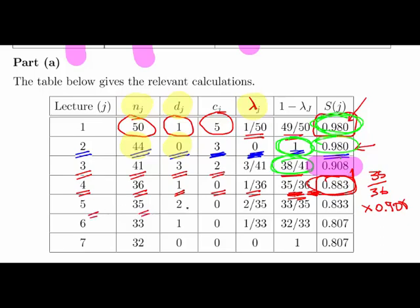So lecture 5. Start off with 35 students. 2 drop out. No registering for different modules. So 2 out of 35 is the event probability, the probability that a student will drop out. 33 out of 35 is the probability that a student will stay in. And therefore our updated survival function is 0.833. And that again is just, at the risk of laboring the point, this number here times this number here. So just multiply them out to give us that number there. It's actually quite procedural. It's actually very straightforward once you get the hang of it.